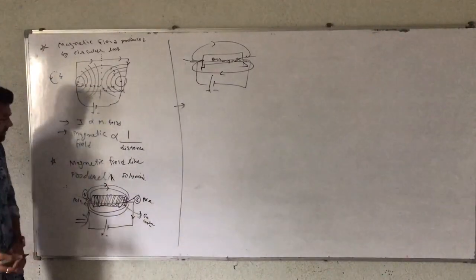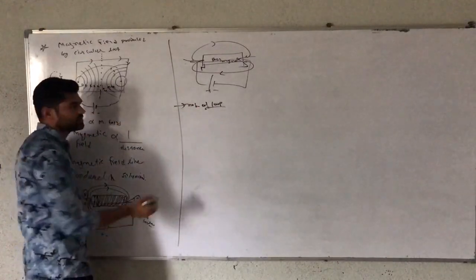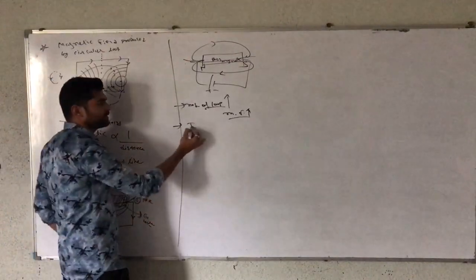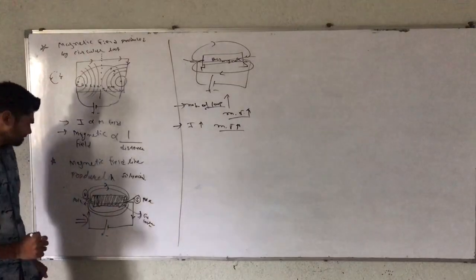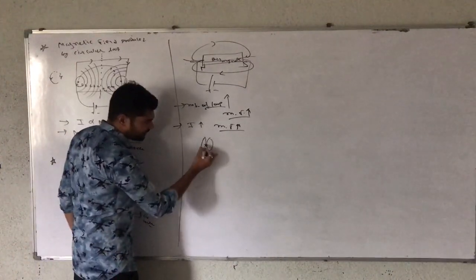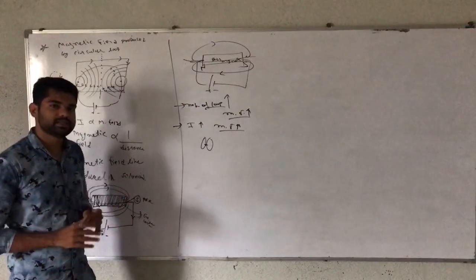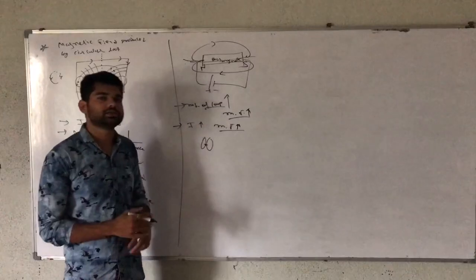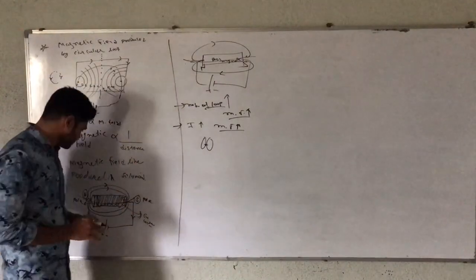Some relations: when the number of loops increases, the magnetic field increases. When electric current increases, the magnetic field produced also increases. Also, the gap between two circular paths — when the gap between circular paths is very less, we have a maximum number of loops in the same cylindrical space. So when the gap between two cylindrical circles is less, the magnetic field is high.